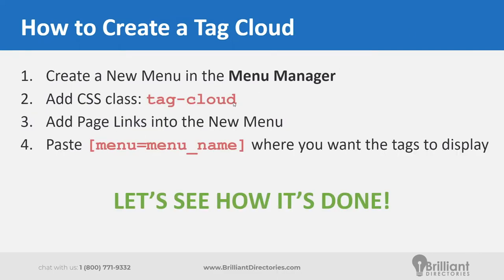To create a tag cloud, you're going to use the menu manager and create a new menu. Give it a nickname and a system name that represents the tag cloud. The key is in the CSS class — add 'tag-cloud'. That's going to style the links accordingly so you don't have to mess around with too much code. You're just letting the system know this menu is for tag cloud links. Then add the pages and links, and paste the shortcode 'menu equals menu-name' wherever you want the tag cloud displayed.